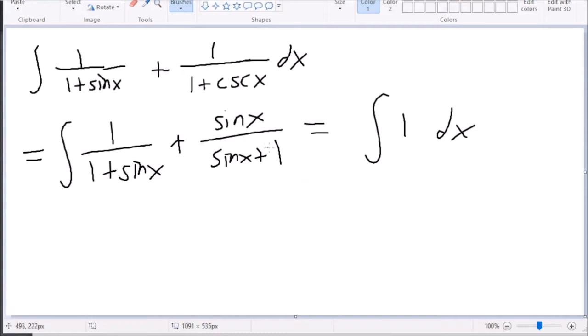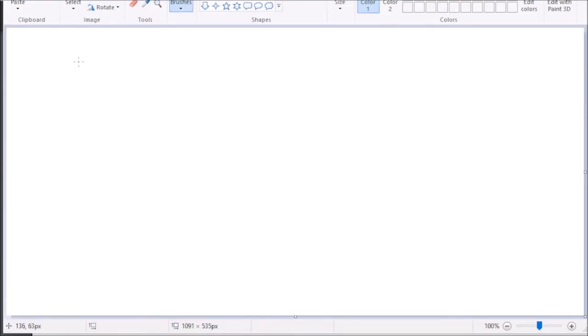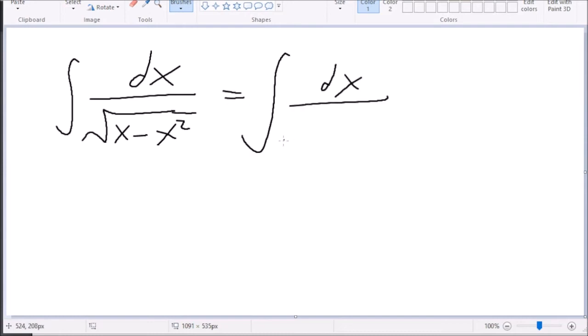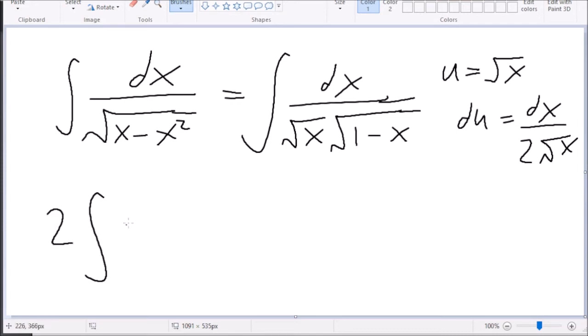So one over square root of x minus x squared - what you do is factor out square root of x. This becomes like one minus x, right? And then u equals root x, then du equals dx over two root x because that's the derivative. So you get two du over one minus u squared, and then this is just two arc sine of square root of x. It's a very common integration problem.